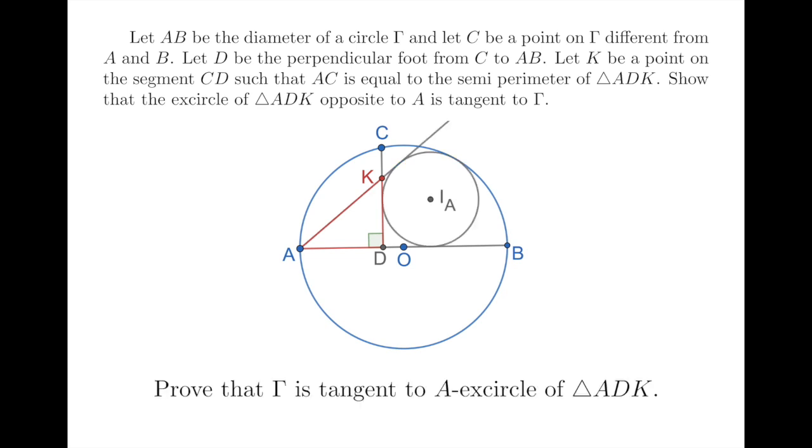And then we want to prove that the excircle opposite to A of this triangle ADK is tangent to the big circle gamma. I must admit that when I first saw this problem, I found the condition on this point K very weird. Then after a while, I realized that we don't really care about this point K. What we need to characterize is this excircle IA. And indeed there is a very natural way to relate the semi-perimeter to the excircle.